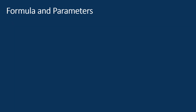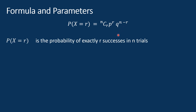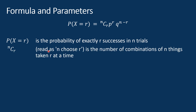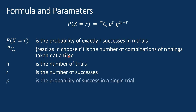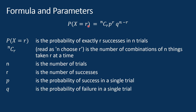To work with binomial distributions, we use the formula P(X = R) = nCr × P^R × Q^(n−R). Where P(X = R) is the probability of exactly R successes in N trials. nCr, read as 'N choose R', is the number of combinations of N things taken R at a time. N is the number of trials, R is the number of successes, P is the probability of success in a single trial, and Q is the probability of failure in a single trial.